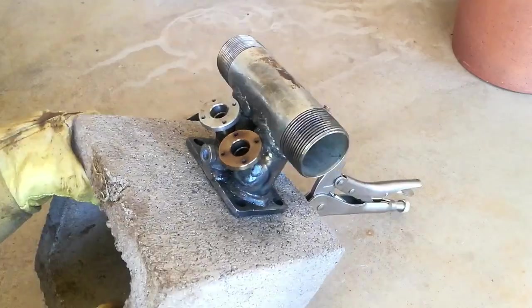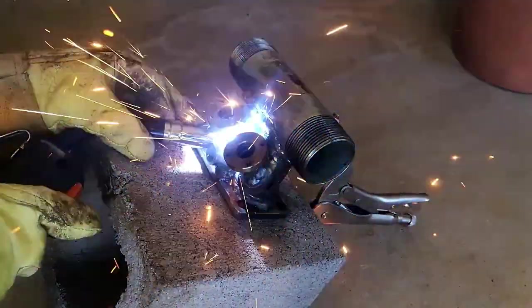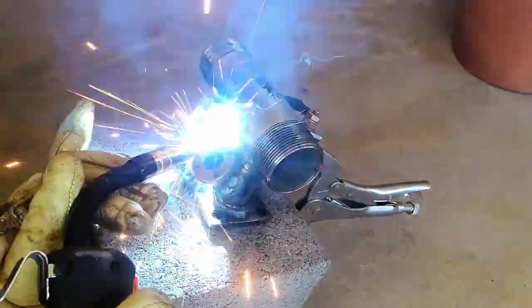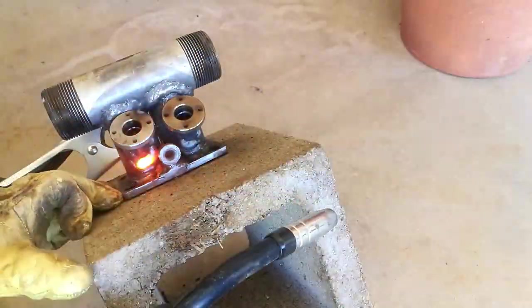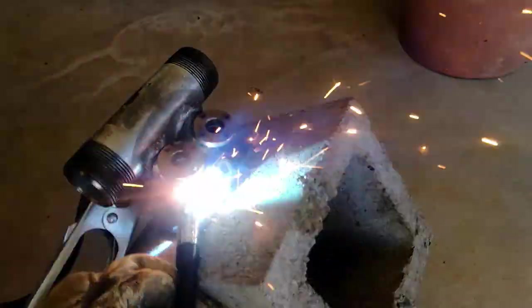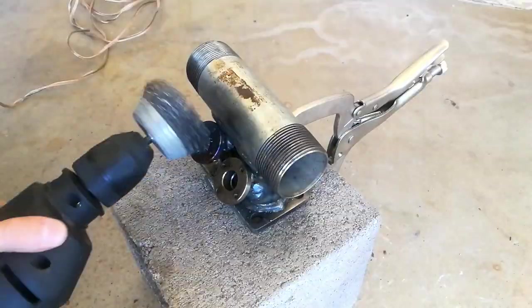However it was at this point that I realized I'd sort of painted myself into a corner because I couldn't reach the MIG welder very far into that middle section between the two bungs. That being said though I ended up just feeding the wire in anyway and it did seem to turn out reasonably well.